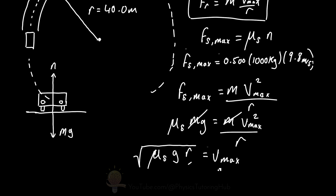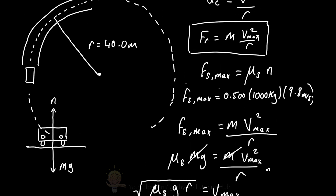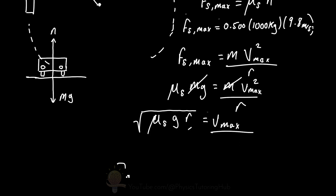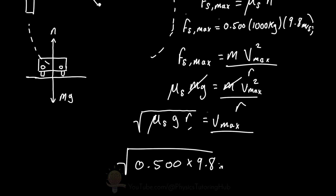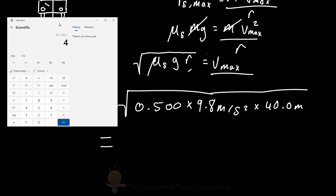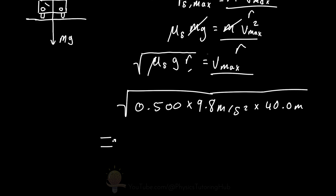So what is this maximum velocity? We've got a radius of 40 metres, a coefficient of static friction of 0.5, multiplied by 9.8 metres per second squared, multiplied by 40 metres — all square rooted. This gives us a maximum velocity of 14 metres per second.